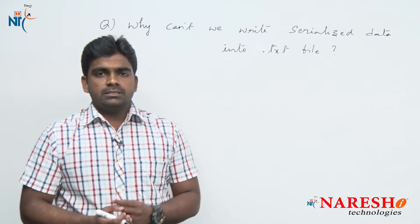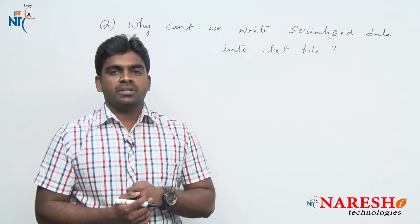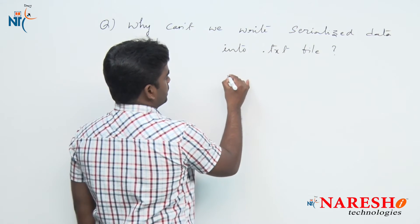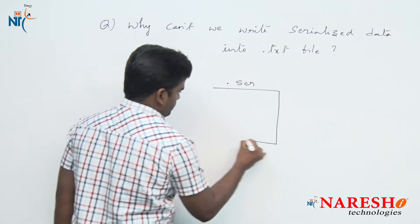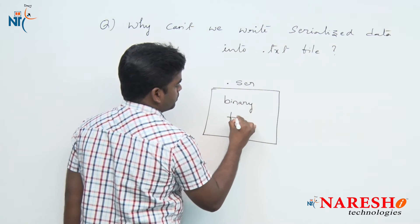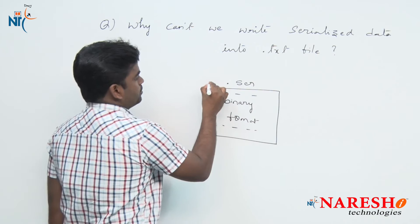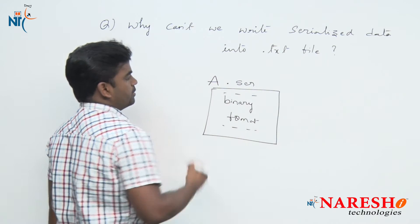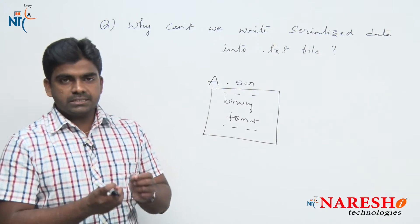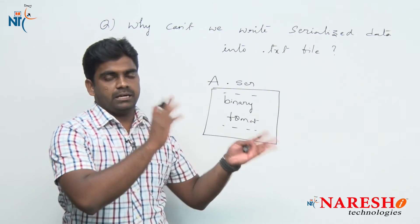Generally we know that serialized information should be placed into a .ser extension file. Whatever data is in a .ser file will be in a binary format — that information will be present in binary format. For example, consider a file named 'a'. After serialization you can send that serialized information — that document — over the network.